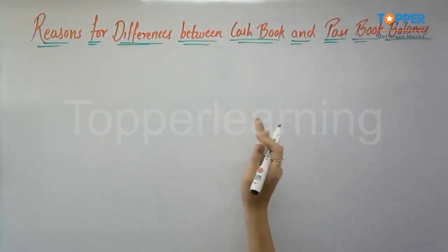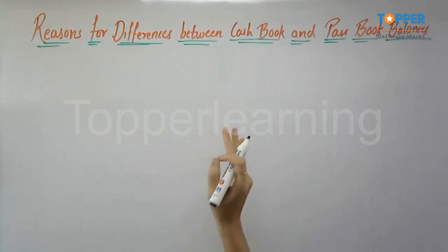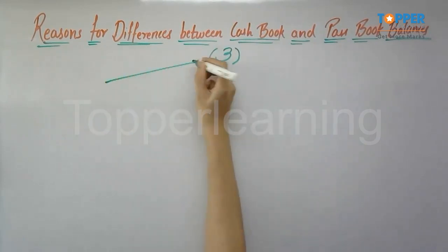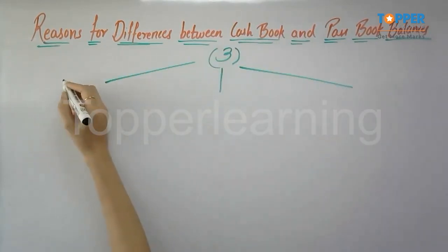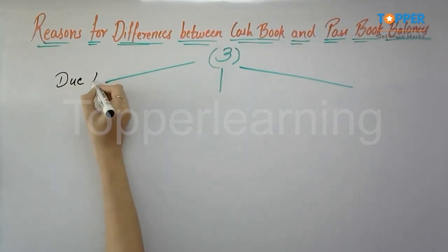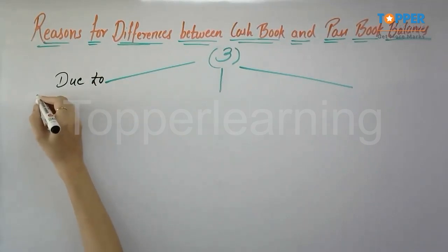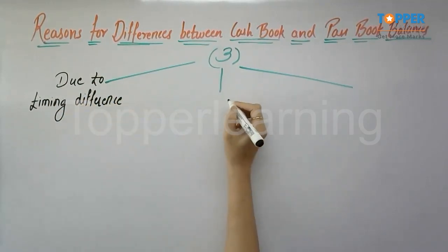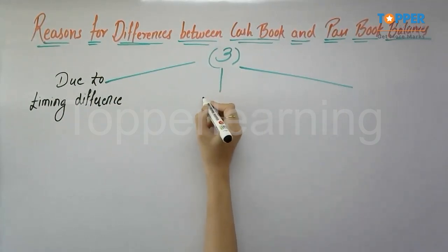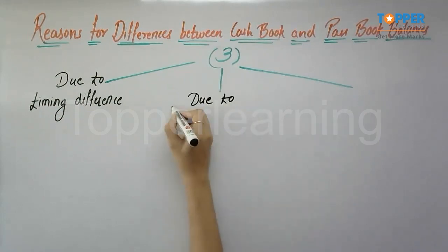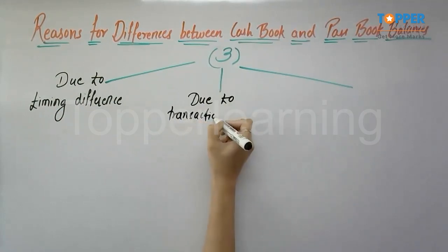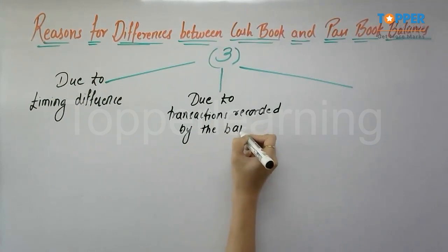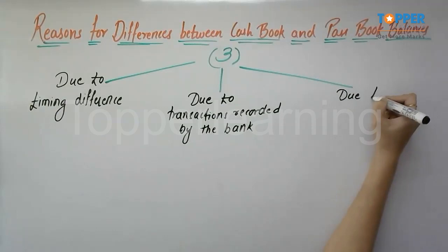In this particular video we are going to learn all of those reasons which are broadly classified into three categories. Firstly, we have the differences due to the timing difference. Secondly, we have the differences due to the transactions. And thirdly, we have the differences due to the errors.